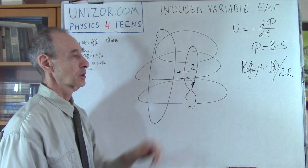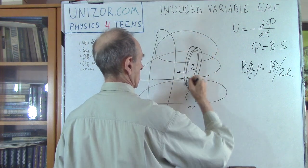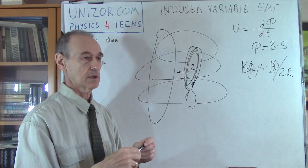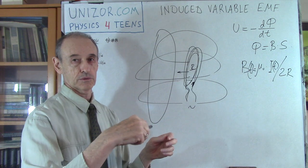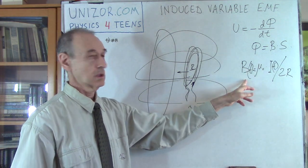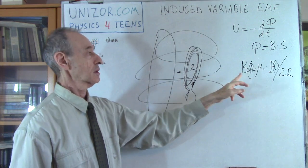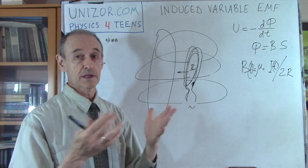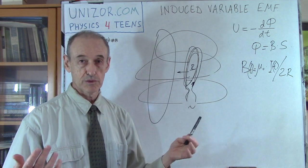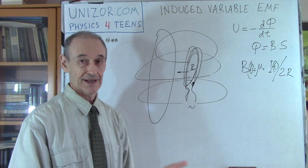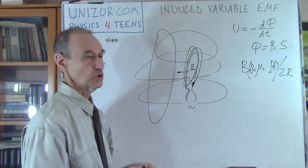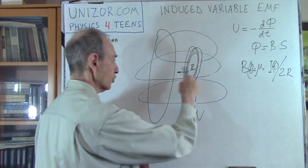What if, instead of one loop on the primary side, you have a spiral? This spiral has tightly positioned loops one near another, but it's one piece of wire with a source of electricity. Each loop creates its own magnetic field intensity vector. Since these loops are very close to each other, each one creates exactly the same magnetic field with exactly the same intensity. Since all the B vectors are identical and parallel, we just multiply by the number of loops N. So if you have N loops, the total intensity is N times greater.